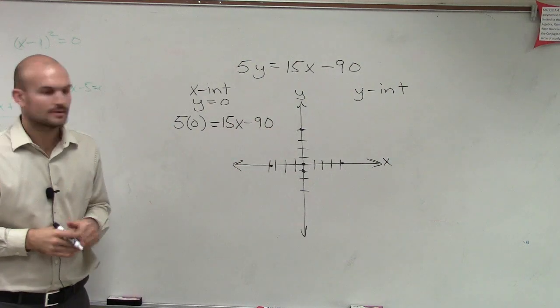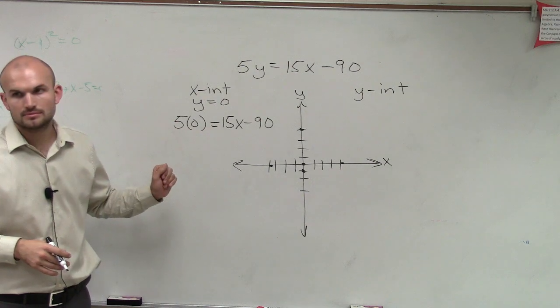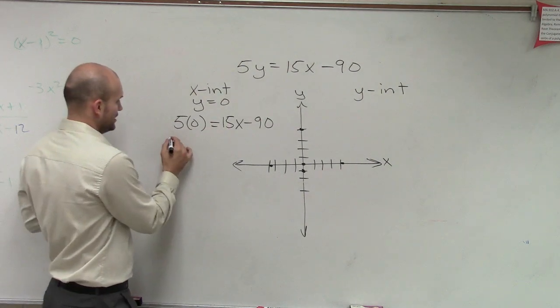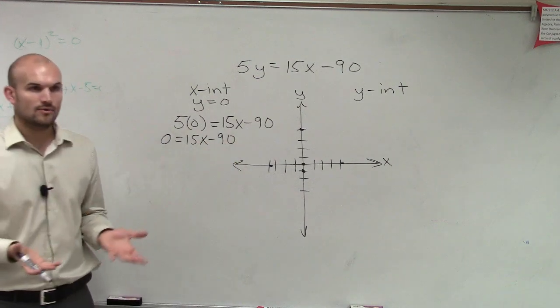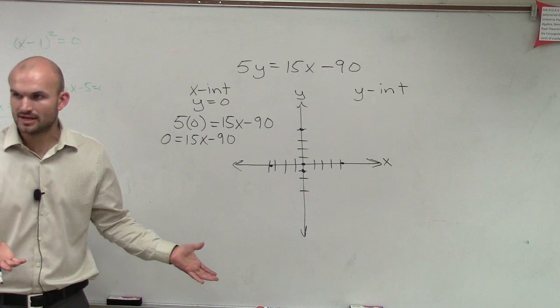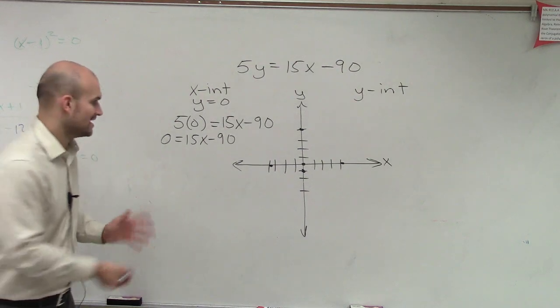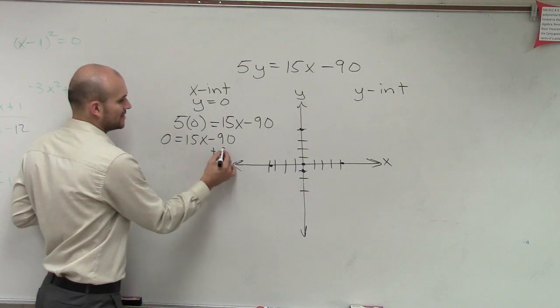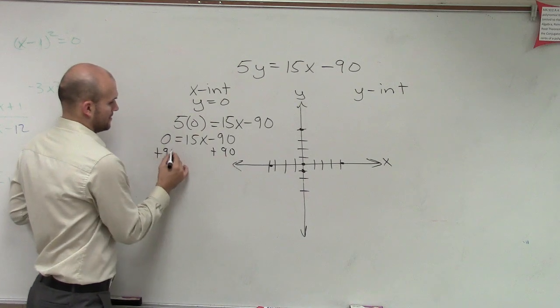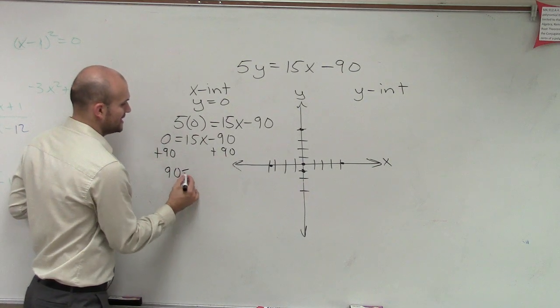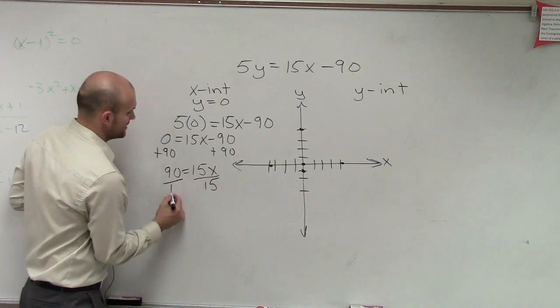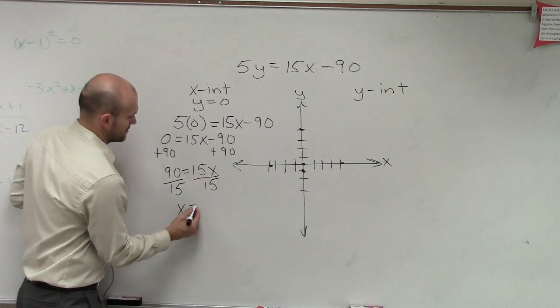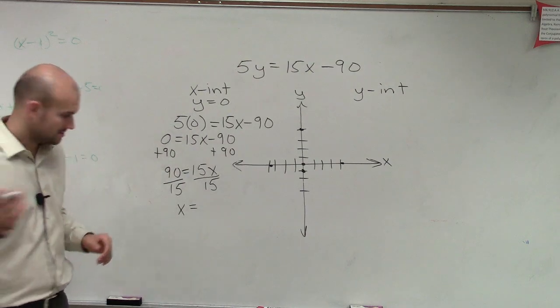Okay, now what's 5 times 0? 0. Good. So 0 equals 15x minus 90. Now we got to get x by itself, right? So this is just like solving equations. You get the 90 on the other side. Then you have 90 equals 15x, divide by 15, x equals 6. Very good.